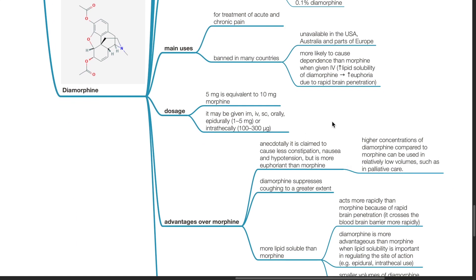Dosage. 5mg of diamorphine is equivalent to 10mg of morphine. It may be given IM, IV, subcutaneous, orally, epidurally or intrathecally.